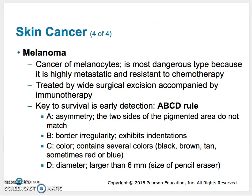Melanoma is the most dangerous. It's highly metastatic. It's hard to catch early. Treatment involves cutting out a very large amount of skin around the tumor, hoping to get all of the cells, and then you get immunotherapy — therapy that actually tells your immune system to attack these cancer cells. The ABCD or ABCDE rule is what dermatologists look for when trying to rule out melanoma.